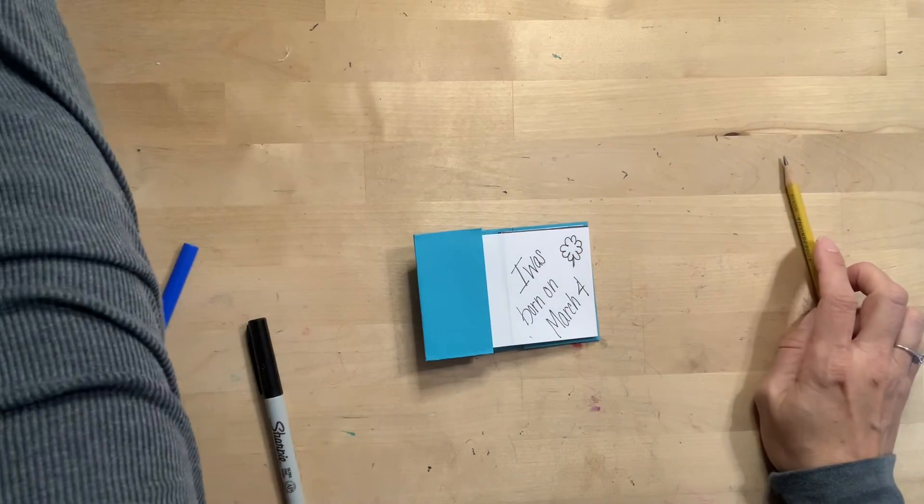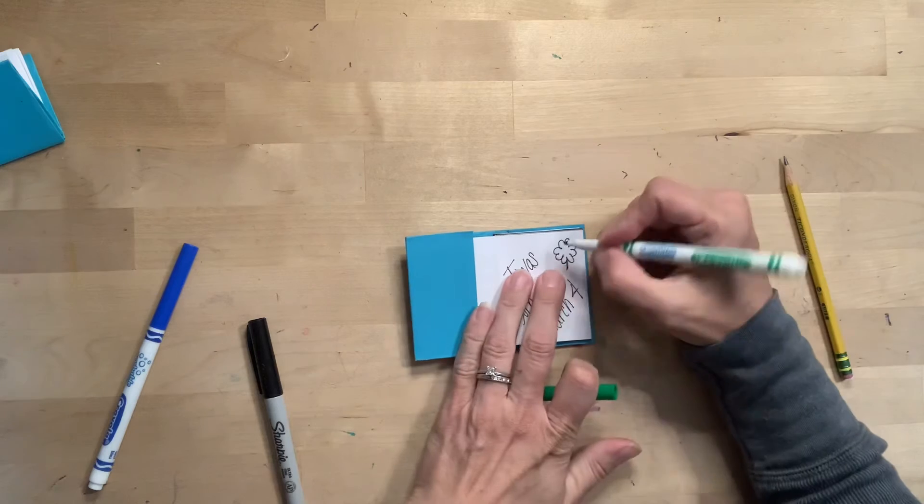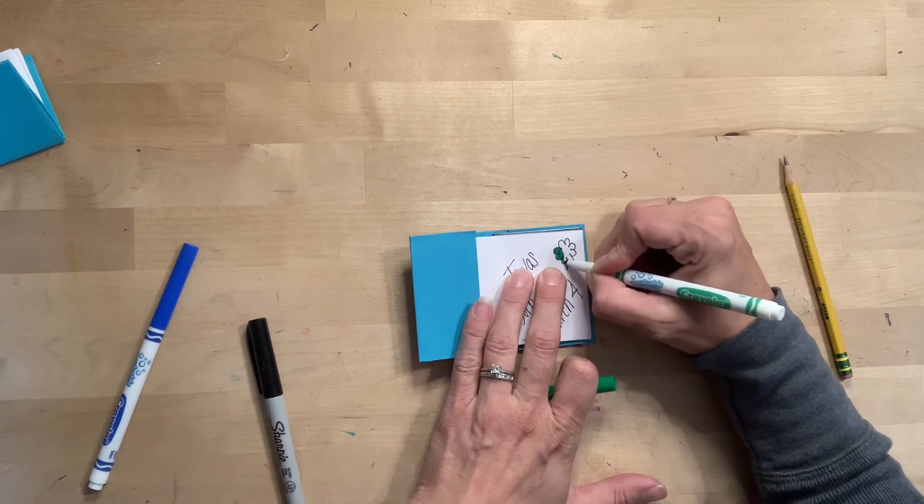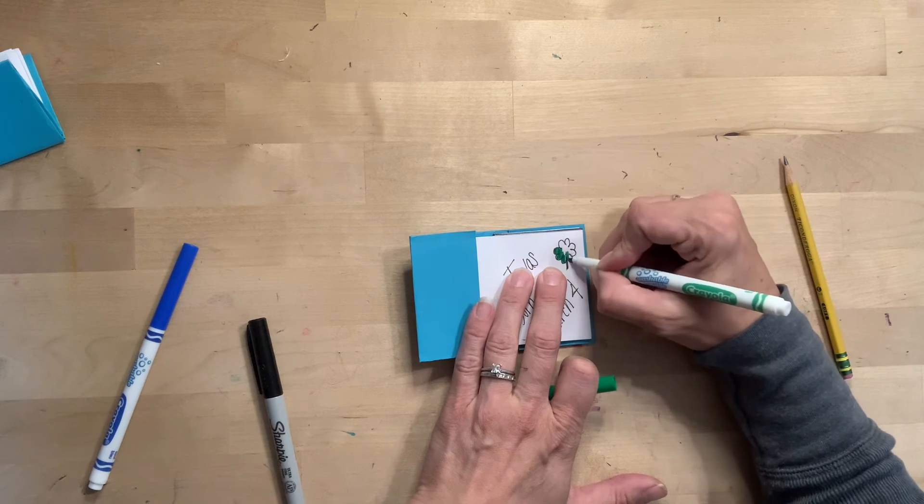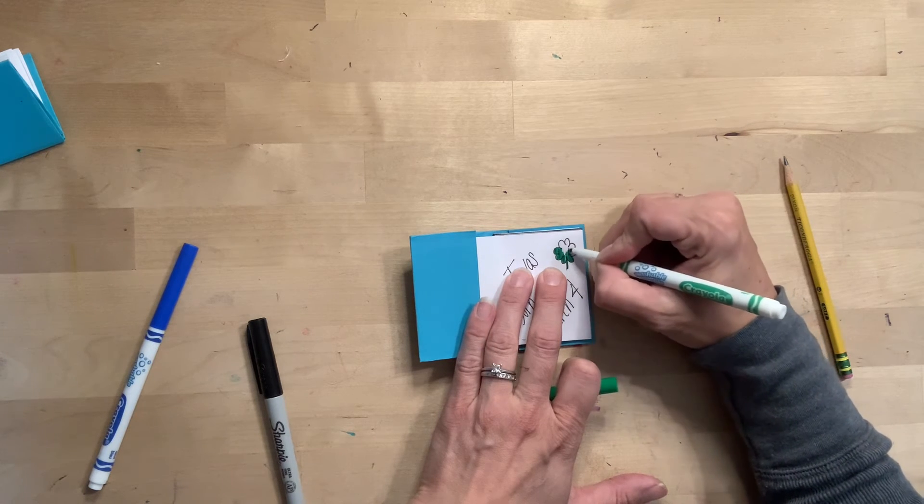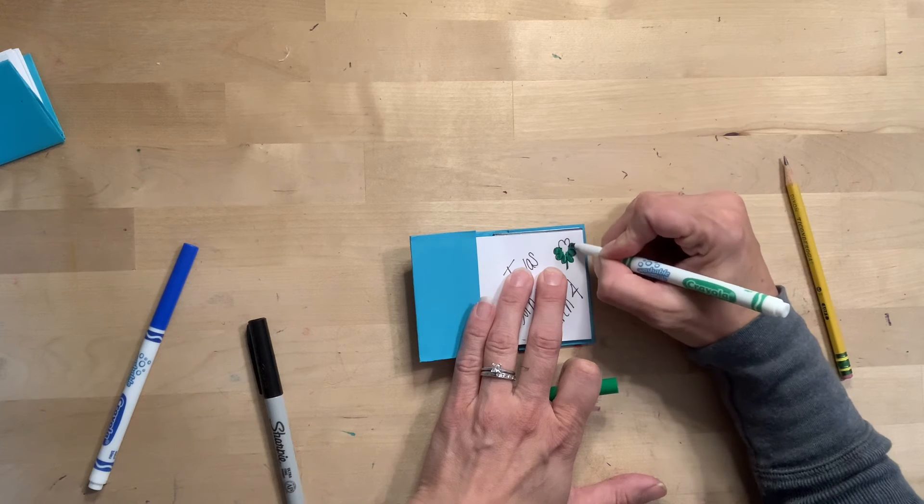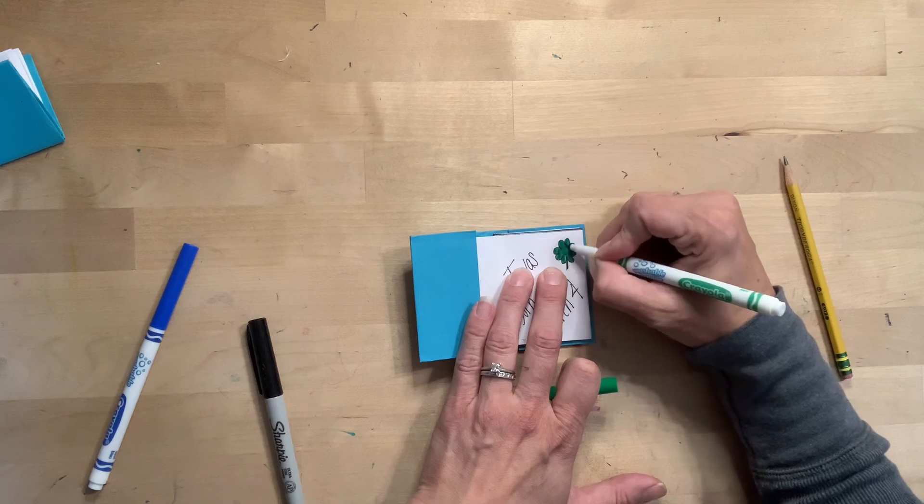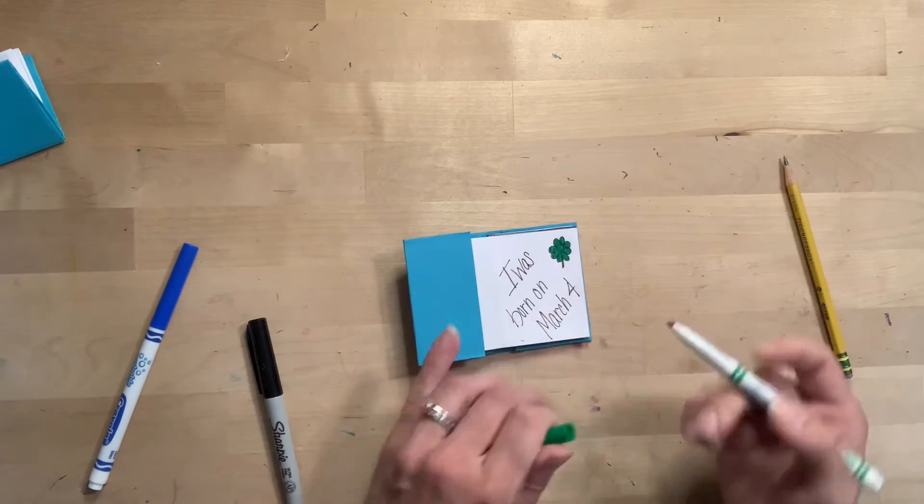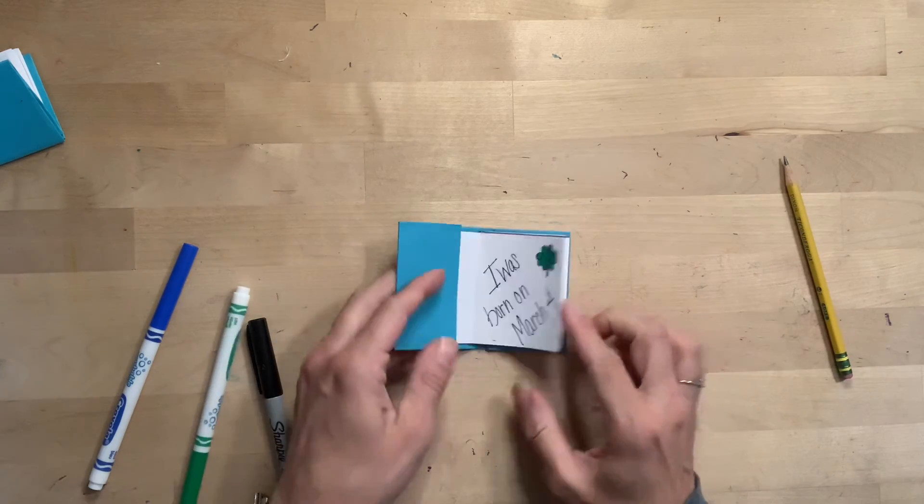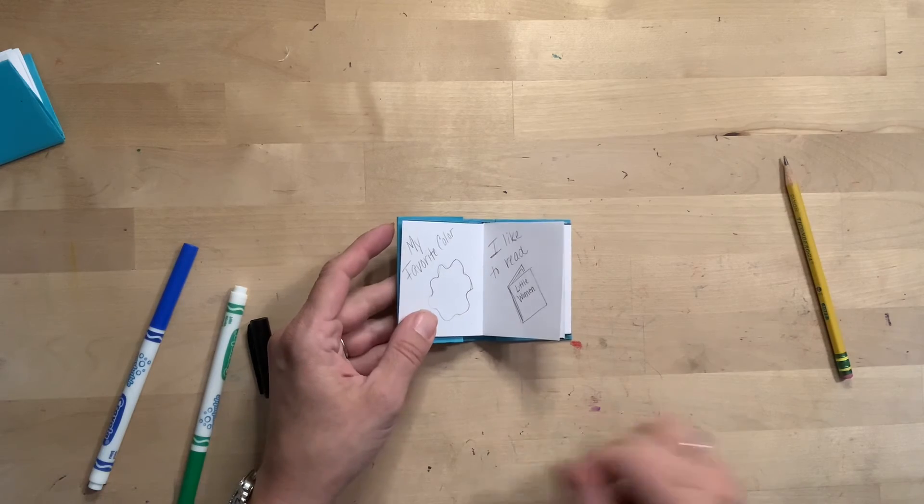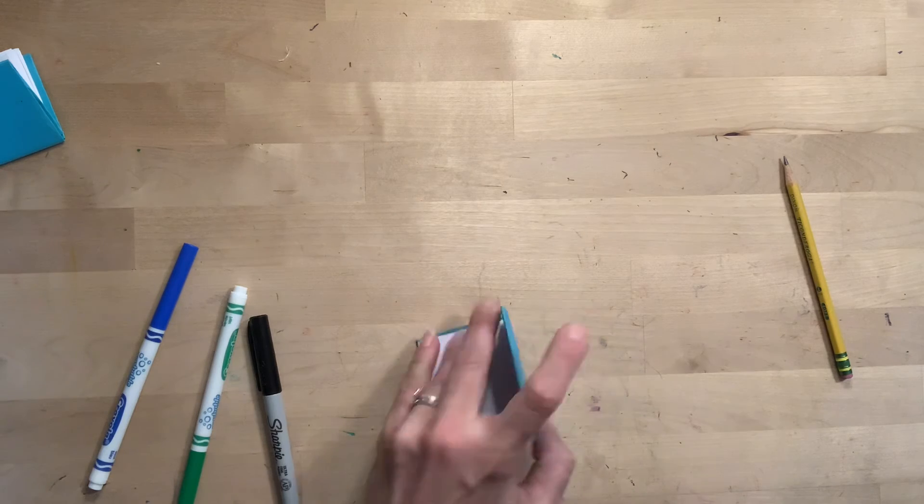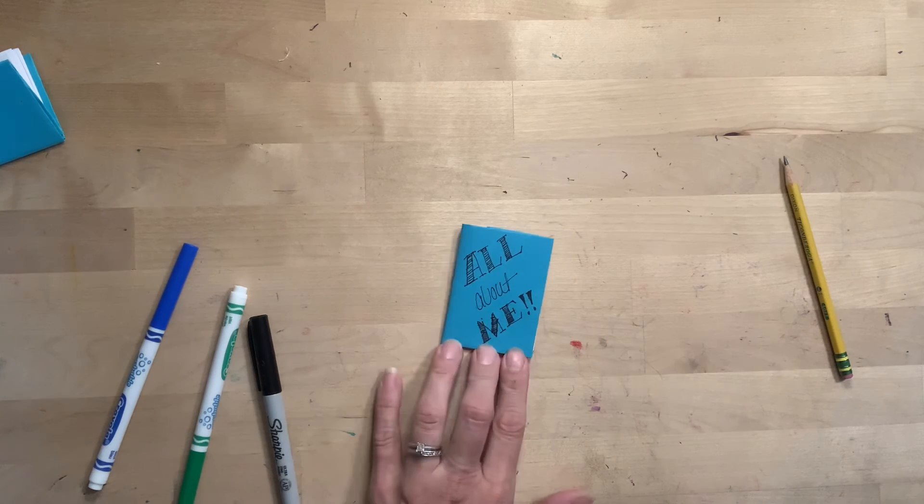And once you have it traced with Sharpie, you can also go back and add some color, color things in. And then you'll just go to the next page and do the same thing all throughout the book until you have a nice little book about yourself.